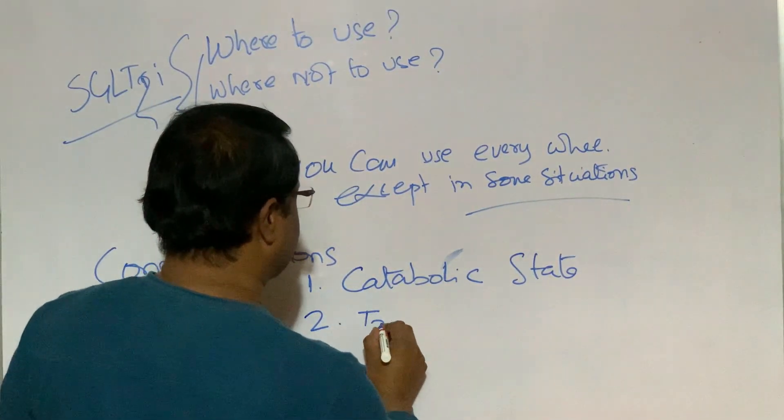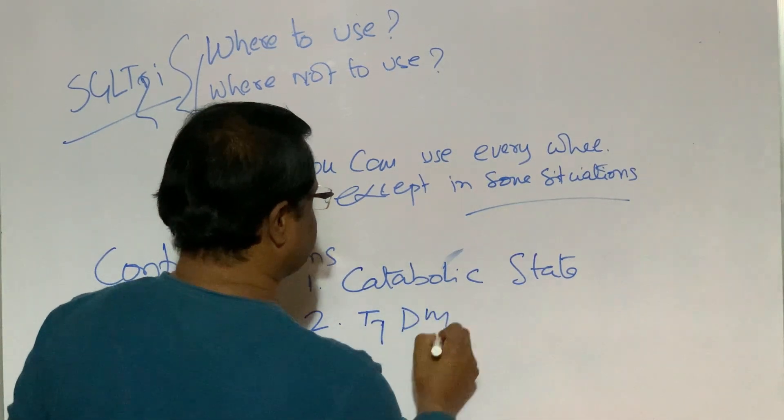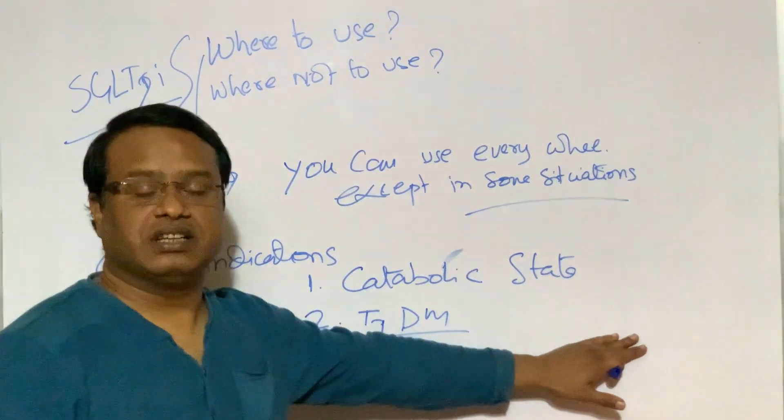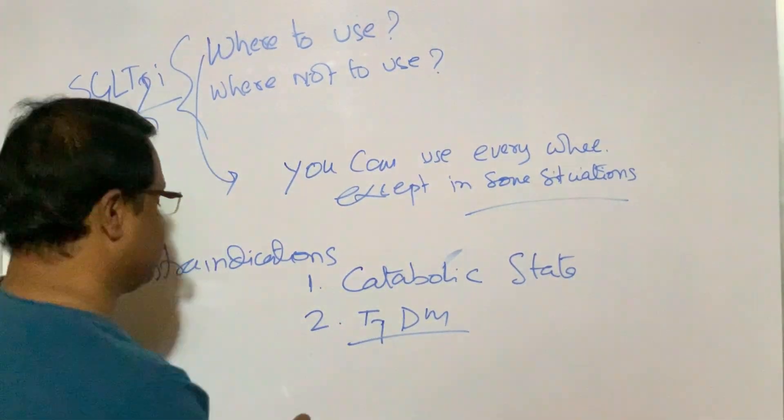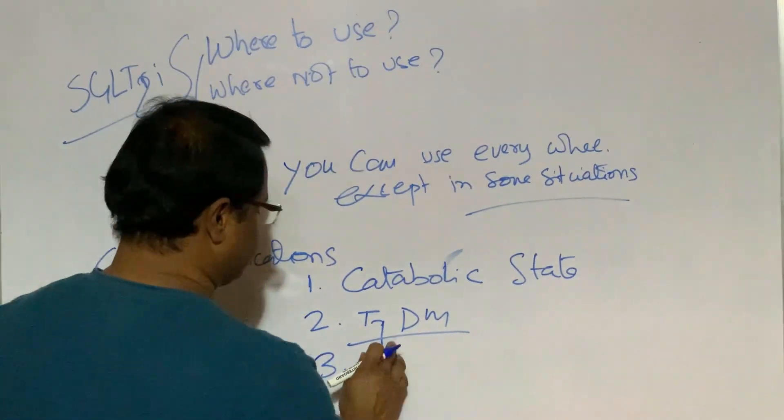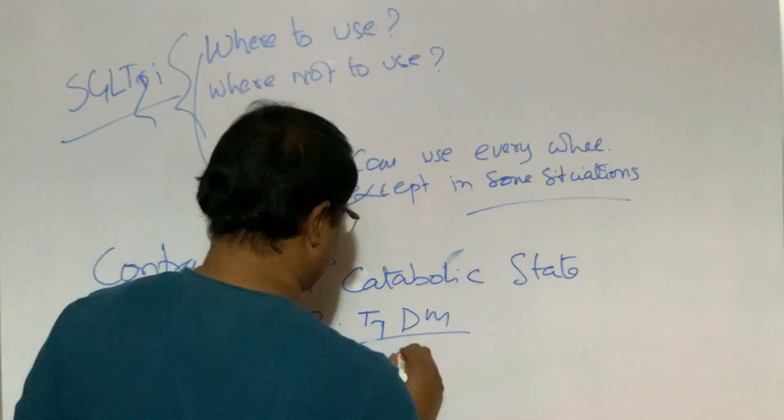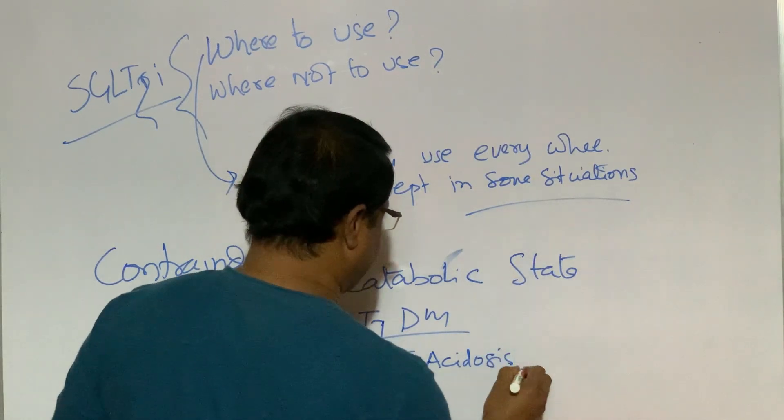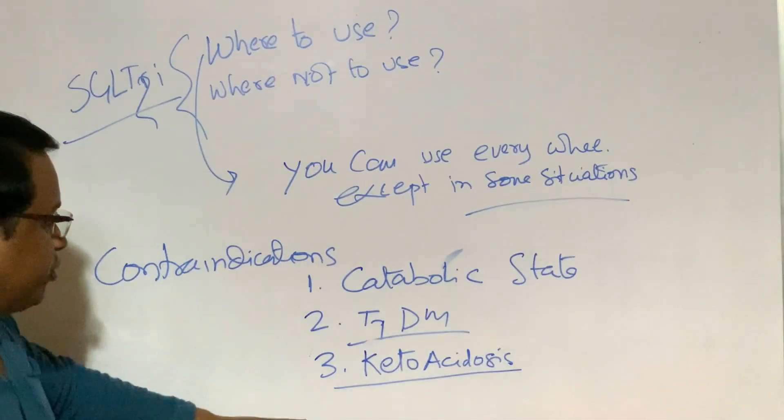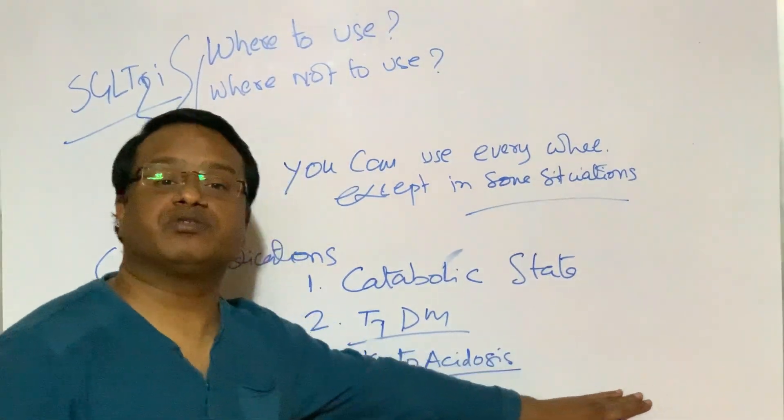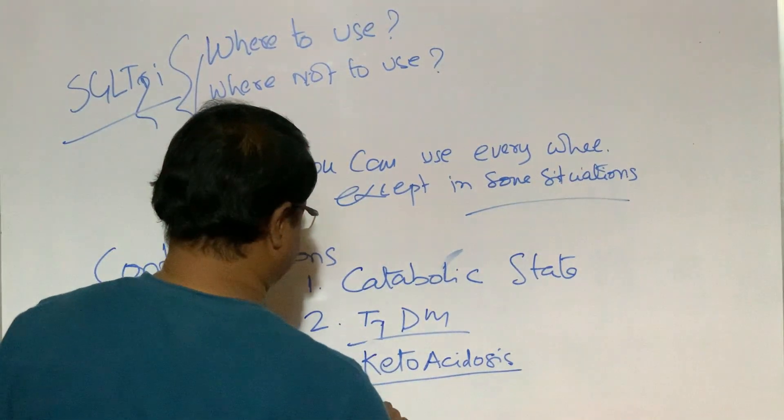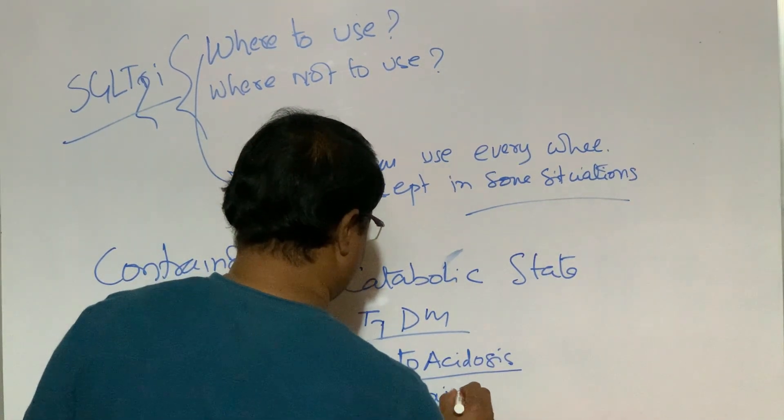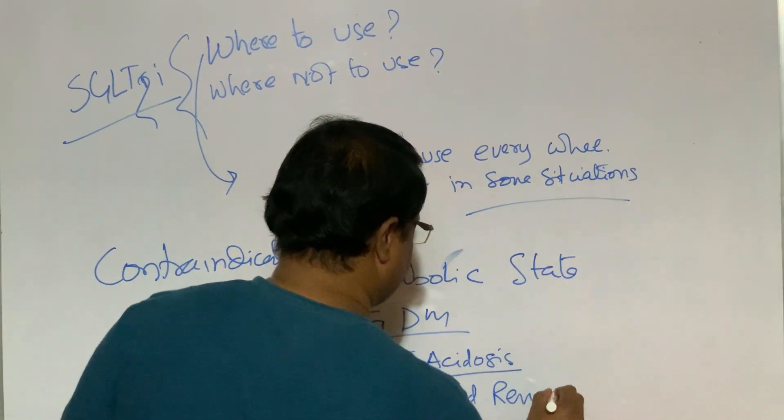Number two, type one diabetes mellitus. We cannot use the drug. Number three, ketoacidosis. In ketoacidosis or ketoacidotic state, we can't use the medicine.